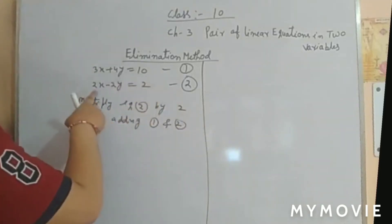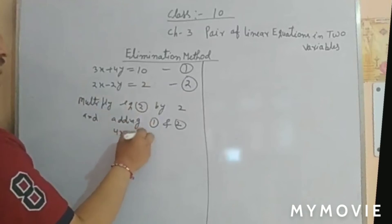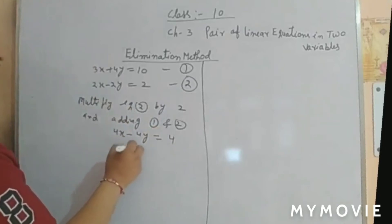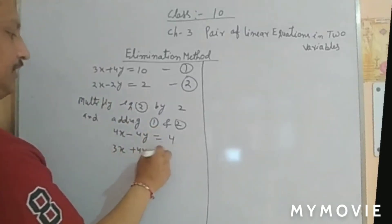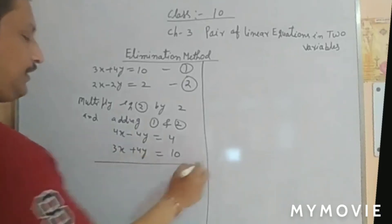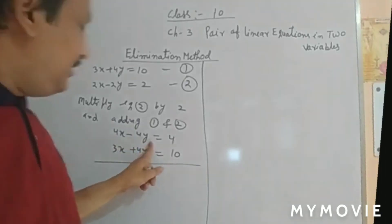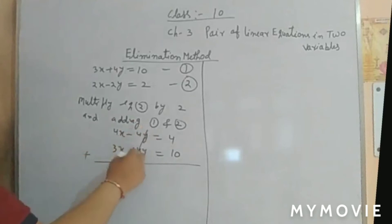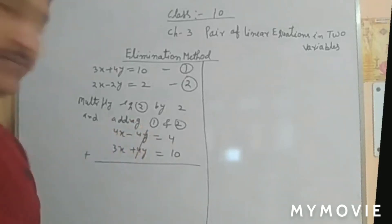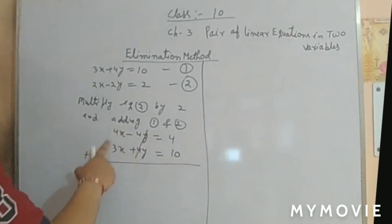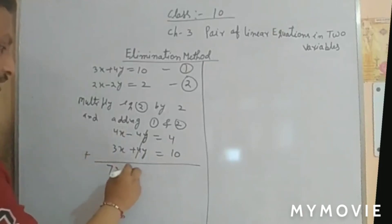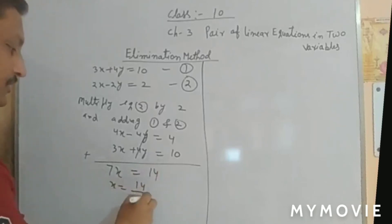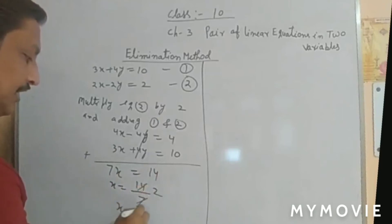Multiplying equation 2 by 2 gives 4x − 4y = 4. Equation 1 is 3x + 4y = 10. Adding these, the −4y and +4y cancel out. So 4x + 3x = 7x equals 10 + 4 = 14. Therefore 7x = 14, giving x = 14/7, which means x = 2.